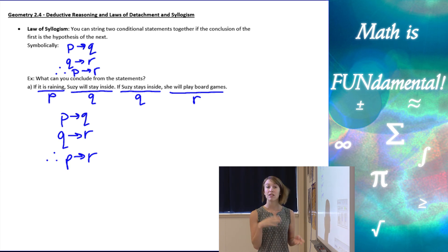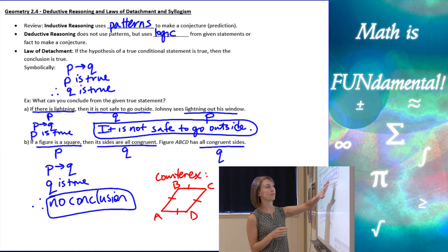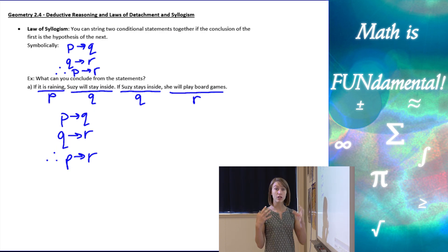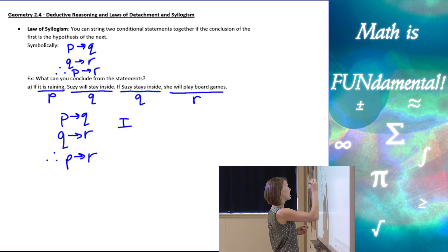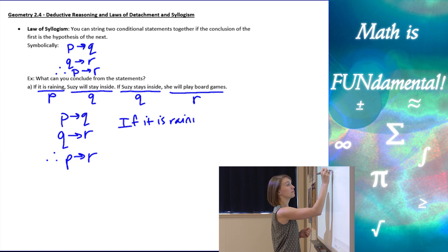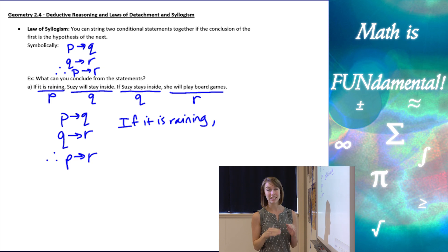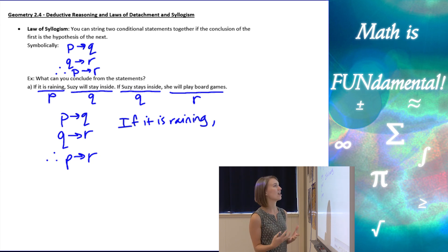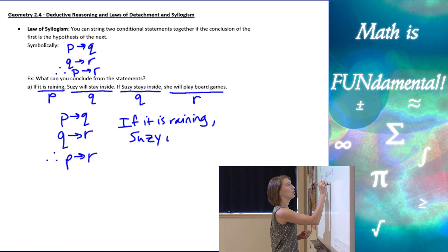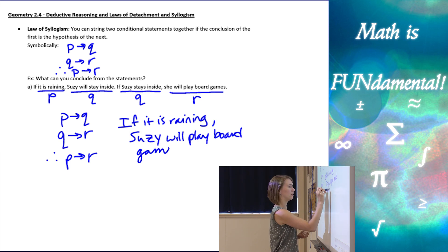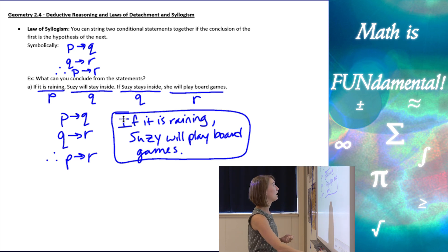Notice that if we were using the law of detachment, our conclusion was not a conditional statement — 'it is not safe to go outside' is just the conclusion part, not an if-then statement. But for the law of syllogism, we want to conclude a complete conditional statement. So I say P: 'if it is raining,' take out the Qs, and conclude 'Susie will play board games.' And that's what we can conclude using the law of syllogism.